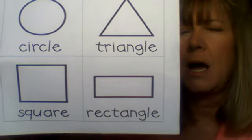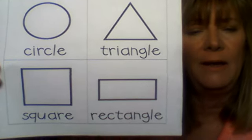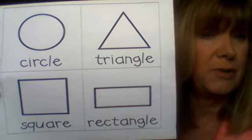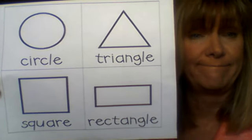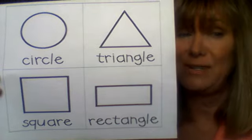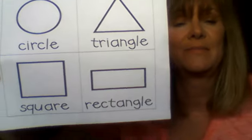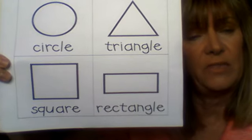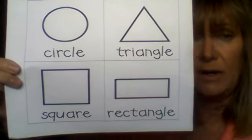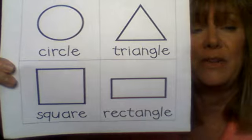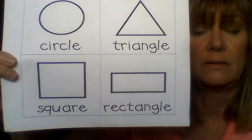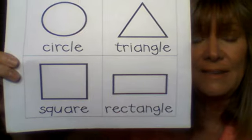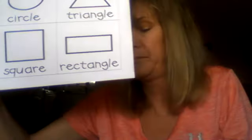I'm thinking of a shape that has three sides and three vertices and it's two-dimensional. I hope you said triangle. One more. I am thinking of a shape that has four sides, four vertices, but the sides are not all equal. Did you say rectangle? Good job.